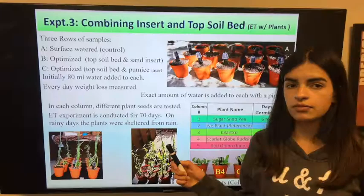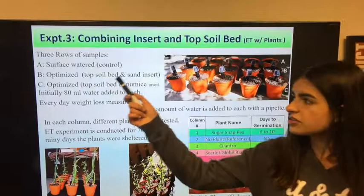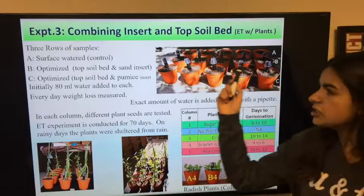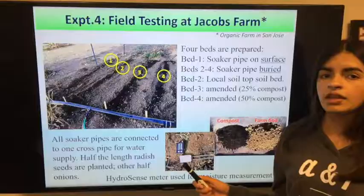For the third experiment, I combined the first two experiments with plants and had three rows of samples. The first row, row A, was the surface water control. Row B was optimized with the sand insert. Row C was optimized with the pumice insert. In each column, there was a different plant type tested.